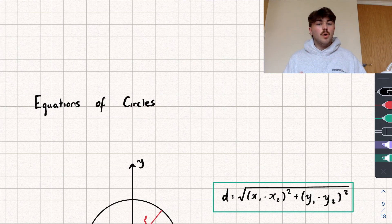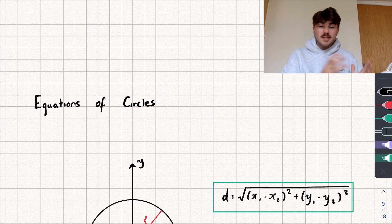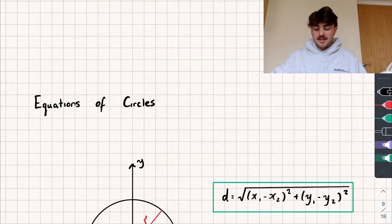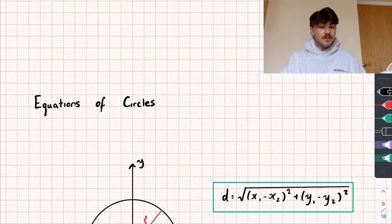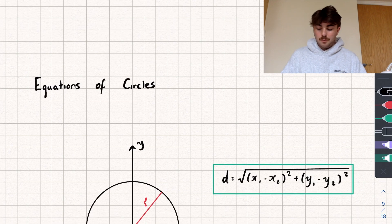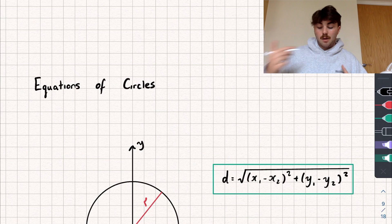In this video we're going to be taking a look at equations of circles. You'll be a little familiar with this already from GCSE Maths, but it's going to come up again at A-level and you need to know a little bit extra as well. Before we start, it's going to be really important to understand the formula for the distance between two points, which we looked at previously in this playlist. We're going to use this to help us find the equation of a circle — it's the formula in the green box.